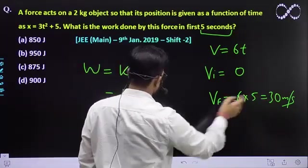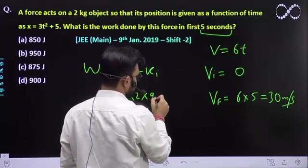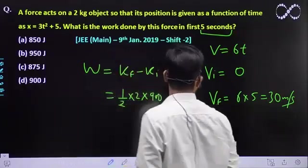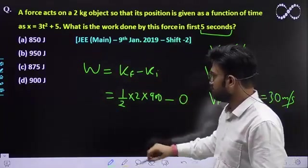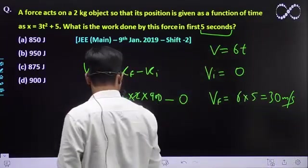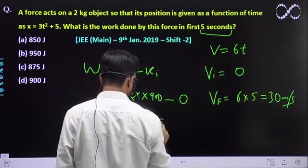So you will be getting 900 minus initial. Initial velocity is 0, so kinetic energy will also be 0. Therefore, you will be getting work done as 900 Joules.